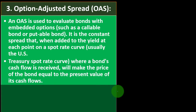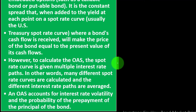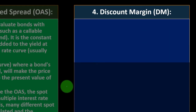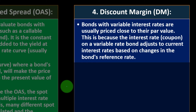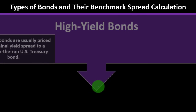The OAS is the constant spread that, when added to the yield at each point on a spot rate curve (usually the U.S. Treasury spot rate curve), will make the price of the bond equal to the present value of its cash flows. To calculate the OAS, the spot rate curve is given multiple interest rate paths — many different spot rate curves are calculated and averaged. The OAS accounts for interest rate volatility and the probability of prepayment of principal. (4) Discount margin (DM) — bonds with variable interest rates are usually priced close to par value because the coupon adjusts to current rates. The DM is the spread that, when added to the bond's current reference rate, will equate the bond's cash flows to its current price.